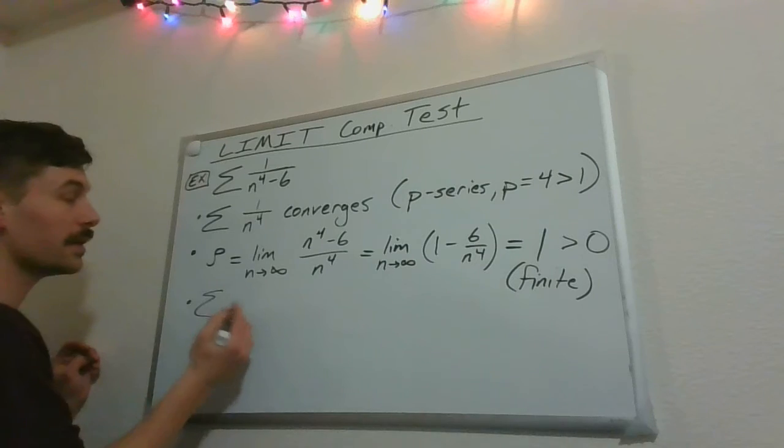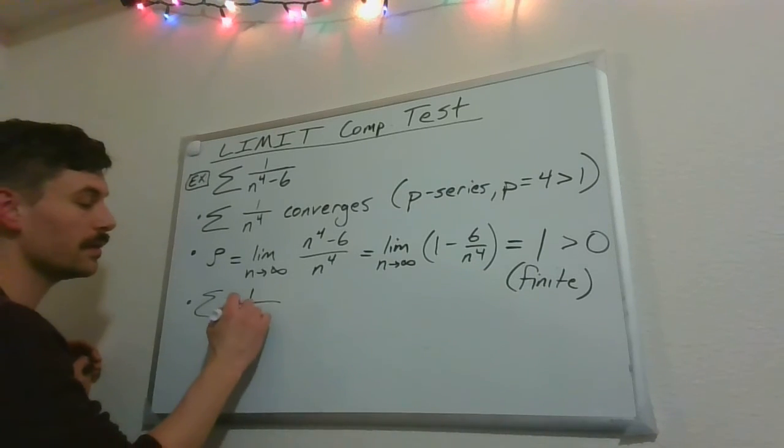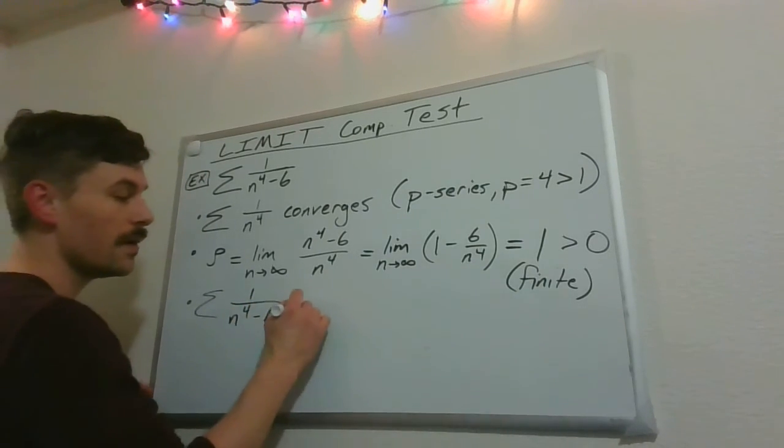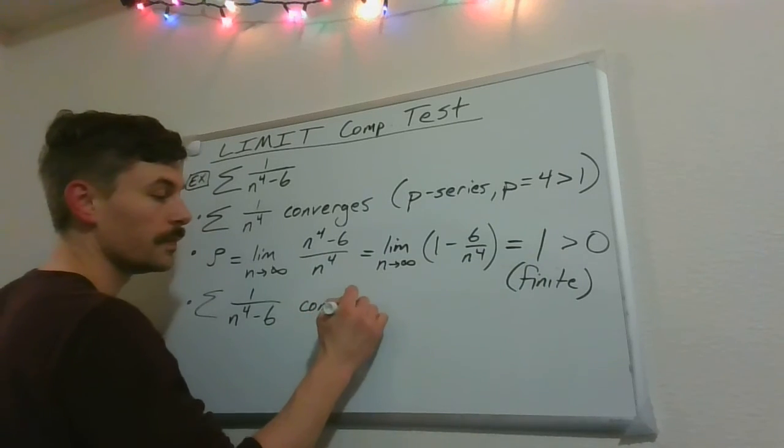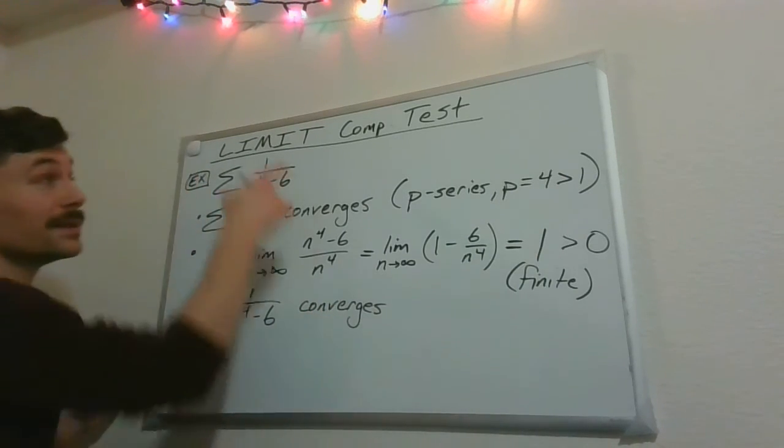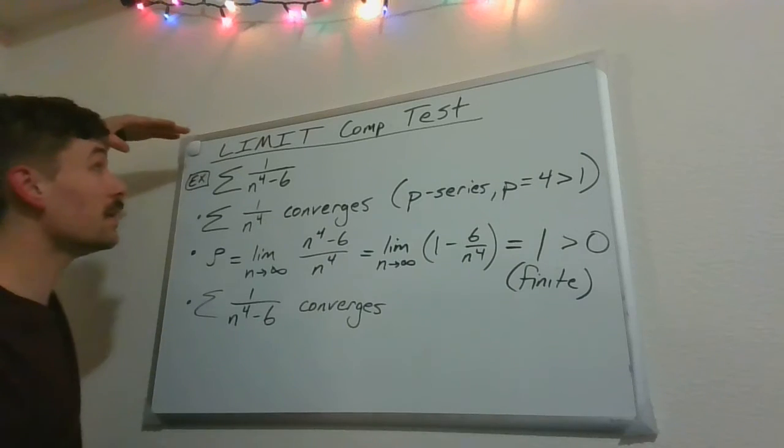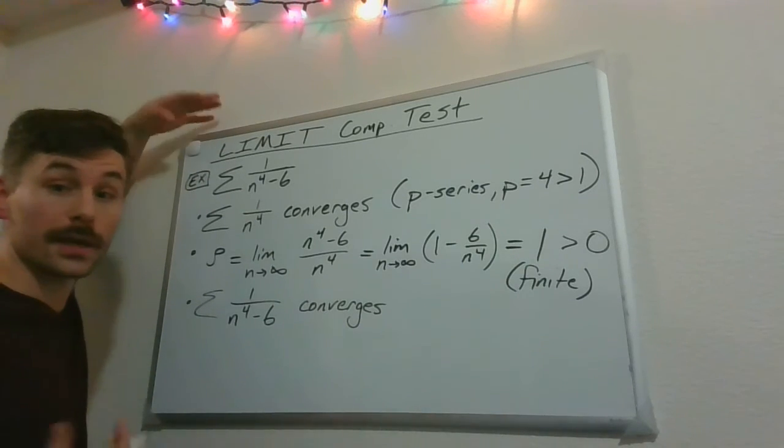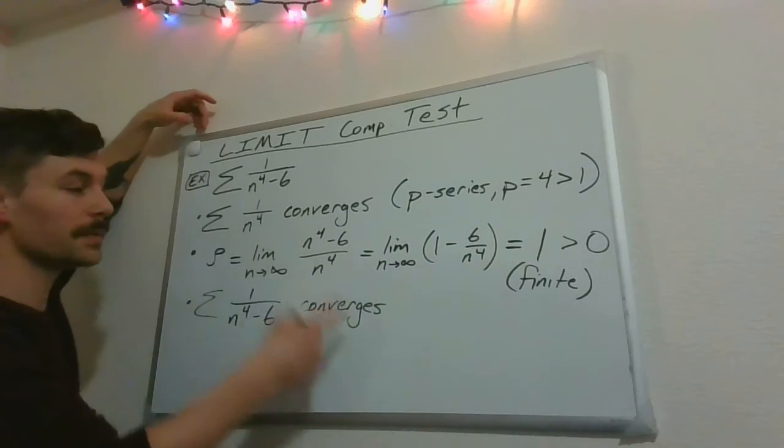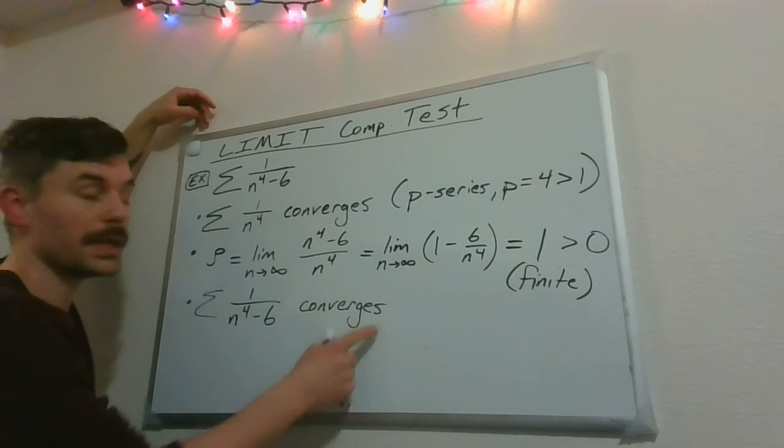But we already called out that 1 over n to the 4th, that series converges, so we can say, okay, great. Then the one we started with, 1 over n to the 4th minus 6, also converges by the limit comparison test. So if we didn't already call it out up here, saying, hey, I'm going to use this, then we should certainly claim that down here.